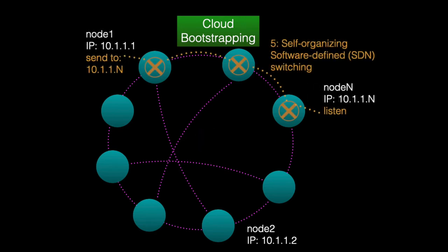The self-organizing overlay provides a foundation for communication, but we still have to move packets from one node to another. EVO uses a software-defined network (SDN) technique to dynamically program switching rules across this fabric.